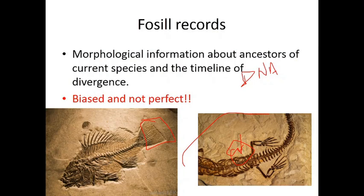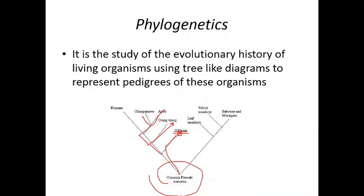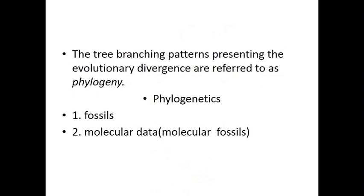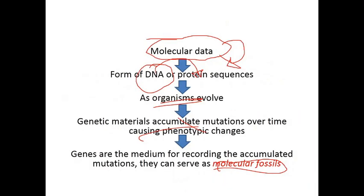We have discussed regarding evolution — what do you mean by evolution? This is change in the gene. The study of evolution is called phylogenetics. Phylogenetics is studied through two kinds of learning: through fossils or through molecular data. Fossils have many biases and imperfections, so to overcome this we should use molecular data.